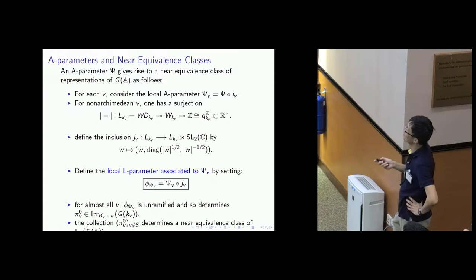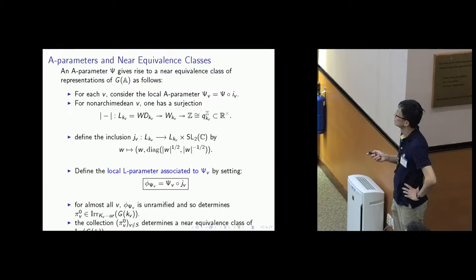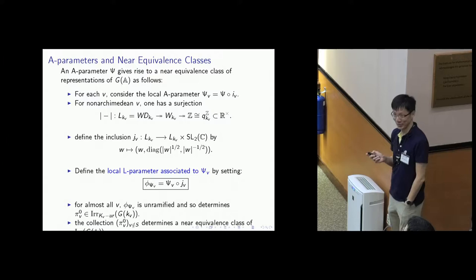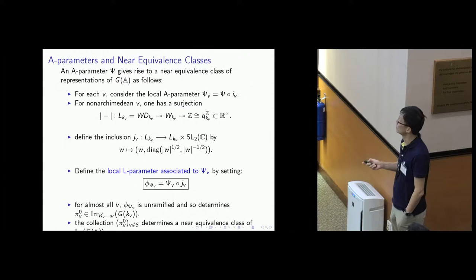This will be called the L-parameter associated to psi_V. So to every local A-parameter, I can associate a local L-parameter in this way. It will turn out that for almost all V, this L-parameter is unramified. And so it determines, by the local Langlands correspondence, a K_V-unramified representation, which I'll call phi_V^0. So now for almost all V, I get a collection, and that determines the near equivalence class.